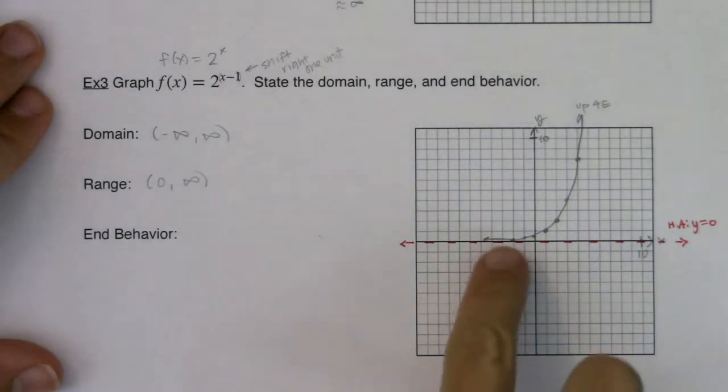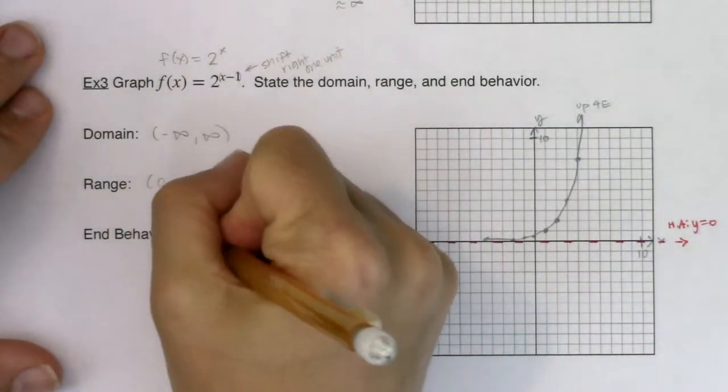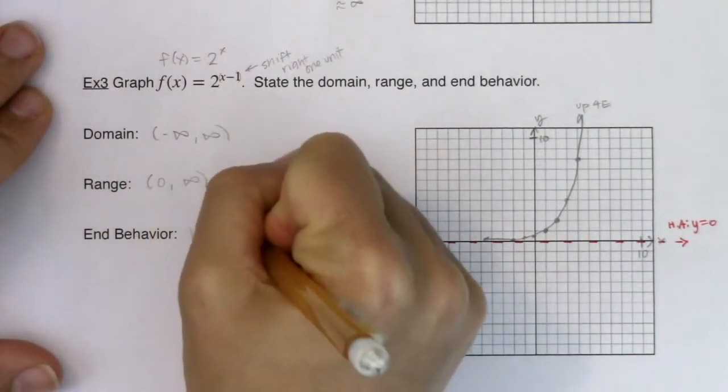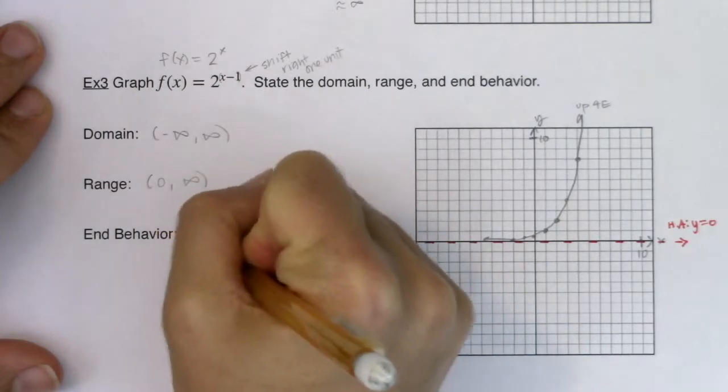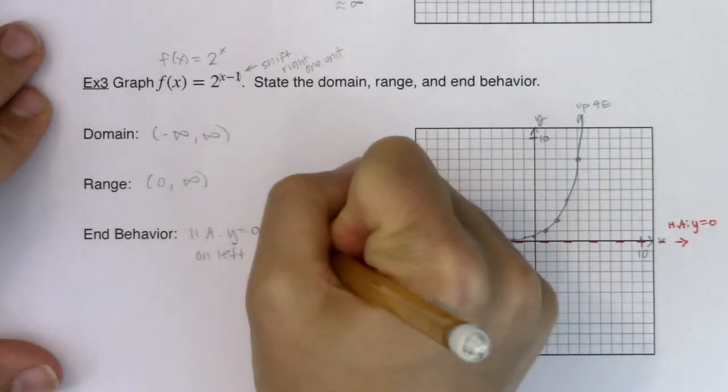If I look at my end behavior, I have my horizontal asymptote of y = 0 on the left, and then I have my right arrow up.